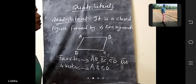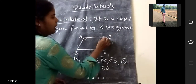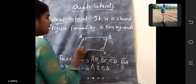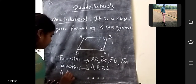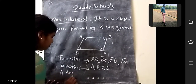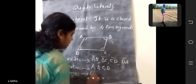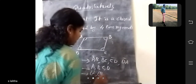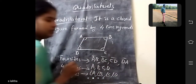And next, angles. What are those angles? Angle A, B, C, D. How many angles? 4 angles. What are those? Angle A, B, C, D.